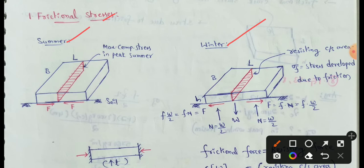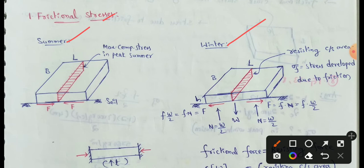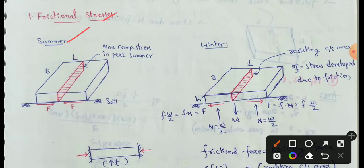First condition is Summer. We have the pavement with length and width. The cross-section area experiences maximum compressive stress in peak summer. In summer season, frictional stresses act towards the inner side — like compression.